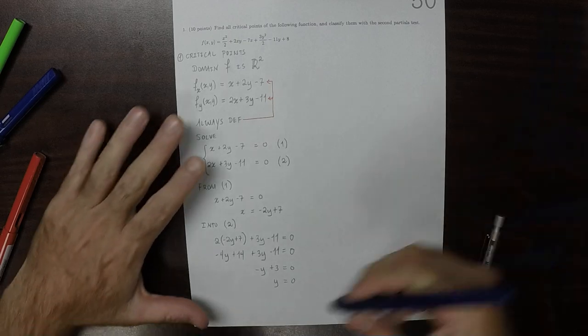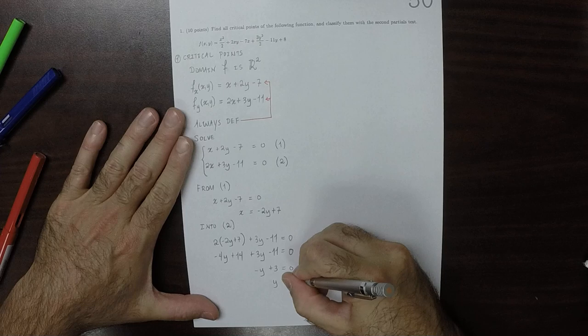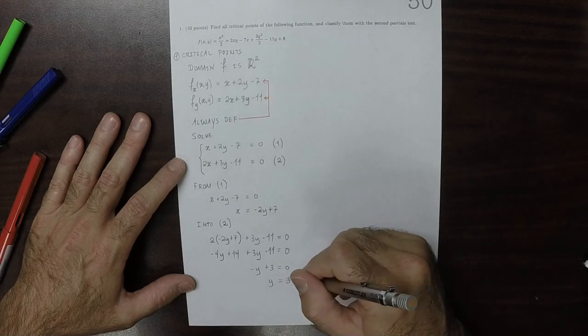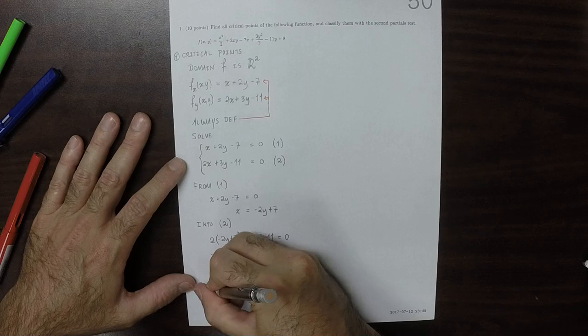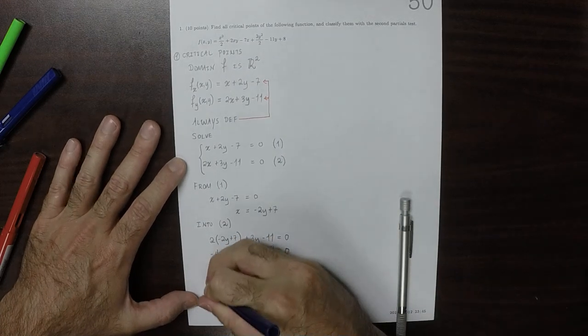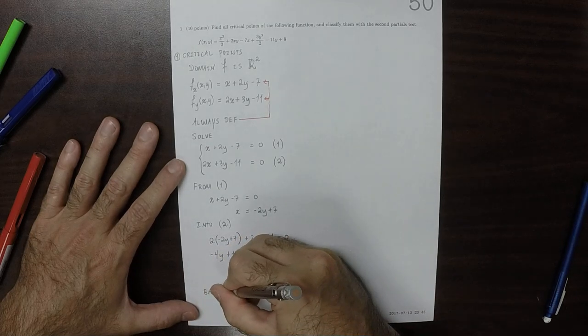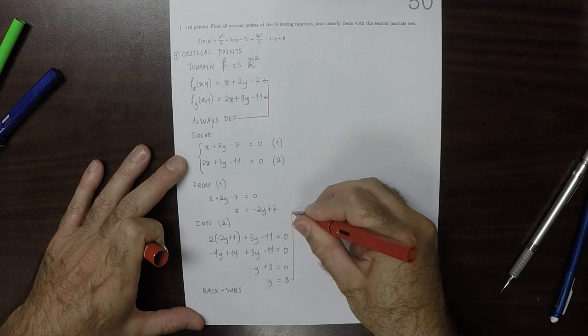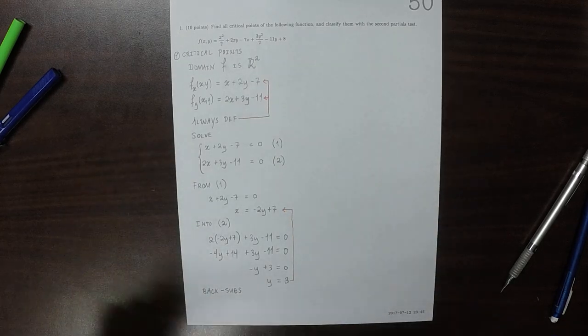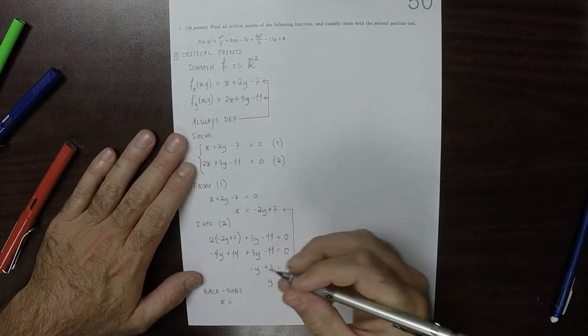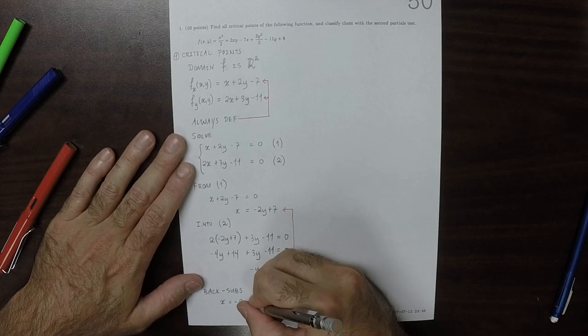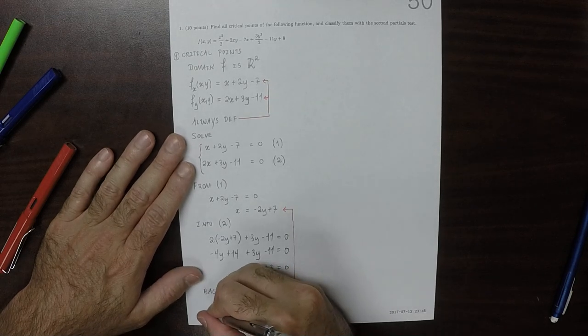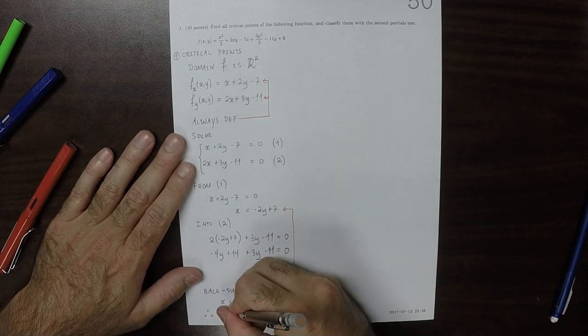Now we want to figure out what x is. We're going to back substitute. We'll take this y, for example, and put it into there. And obtain that x is negative 2, and then we said y was 3, so negative 2 times 3 and then plus 7. Well, that's negative 6 plus 7, so that's 1. Therefore, the one and only critical point is the point 1, 3.